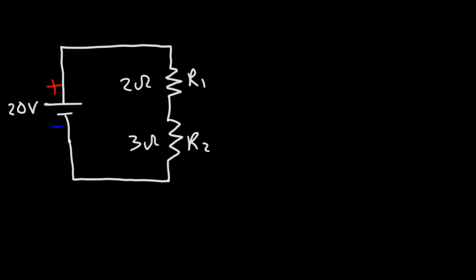First we need to know what type of circuit we have, and this is a series circuit. It's called a series circuit because the current has only one path to flow through these resistors. In a parallel circuit the current can flow in multiple directions — when there are multiple paths the current can flow, you have a parallel circuit. But in a series circuit there's only one path for the current to flow.